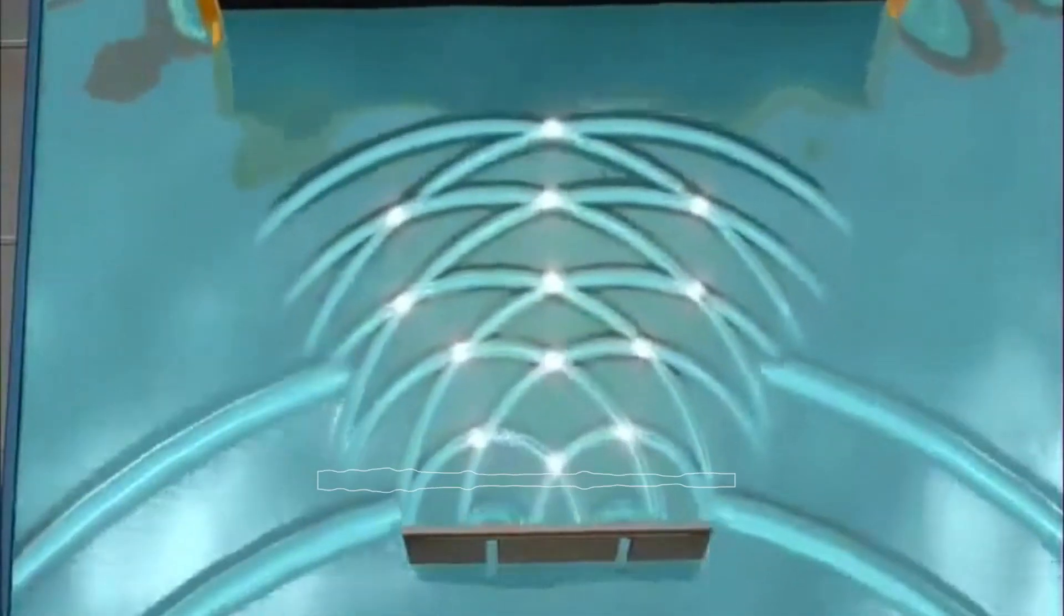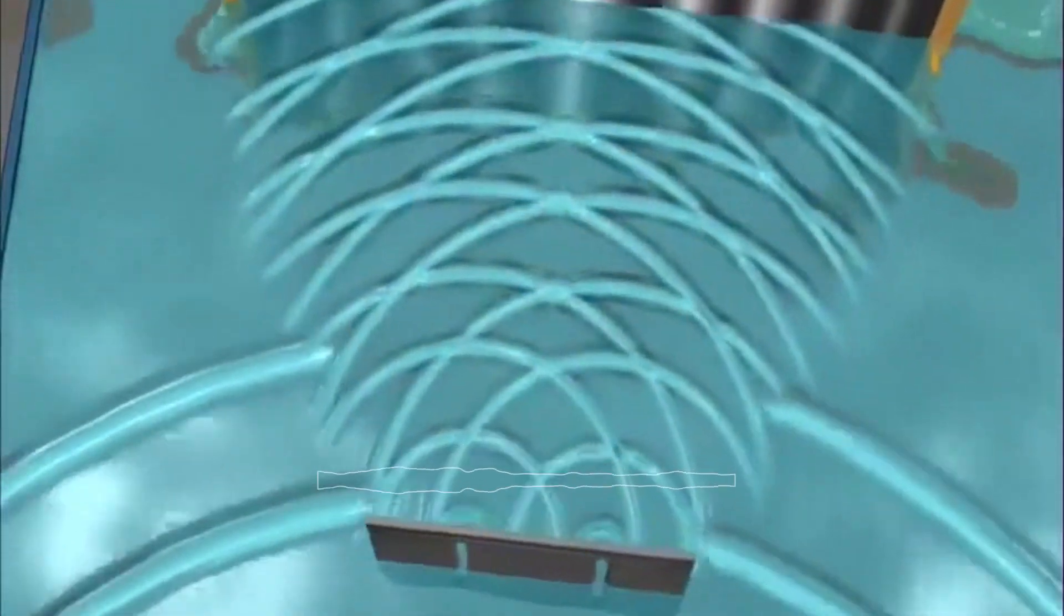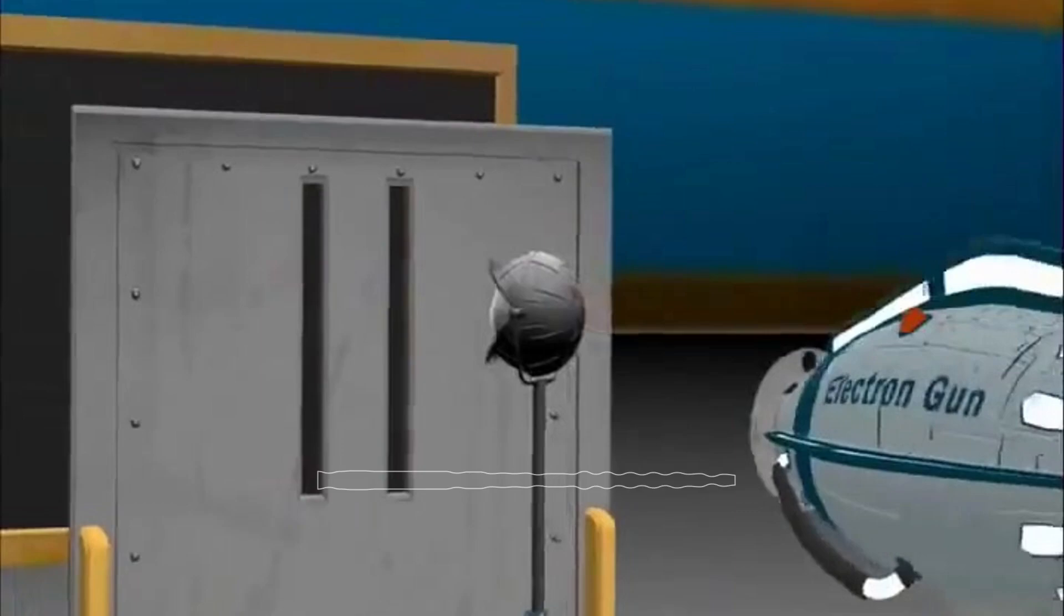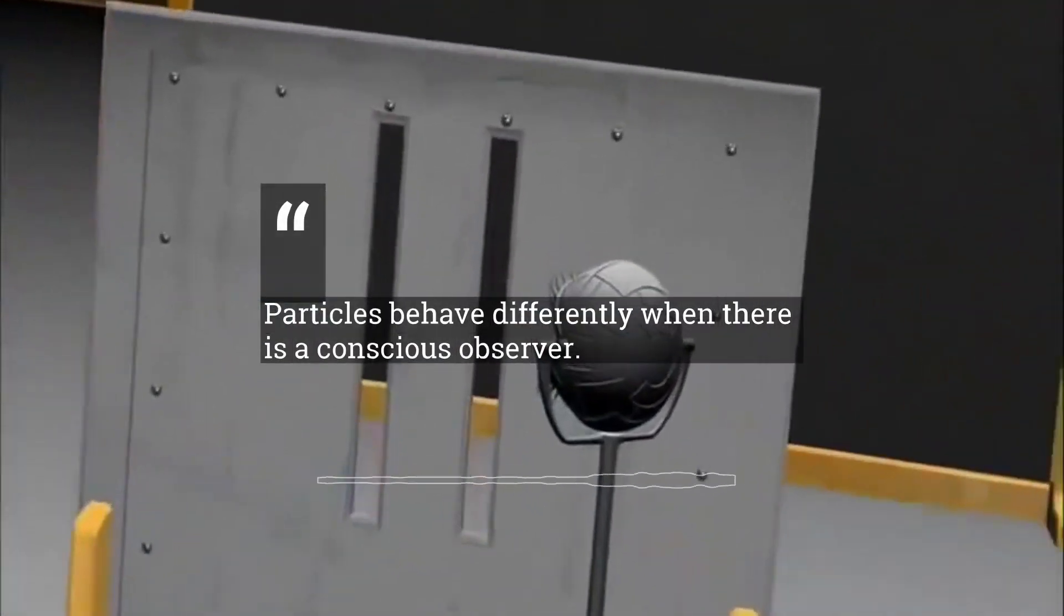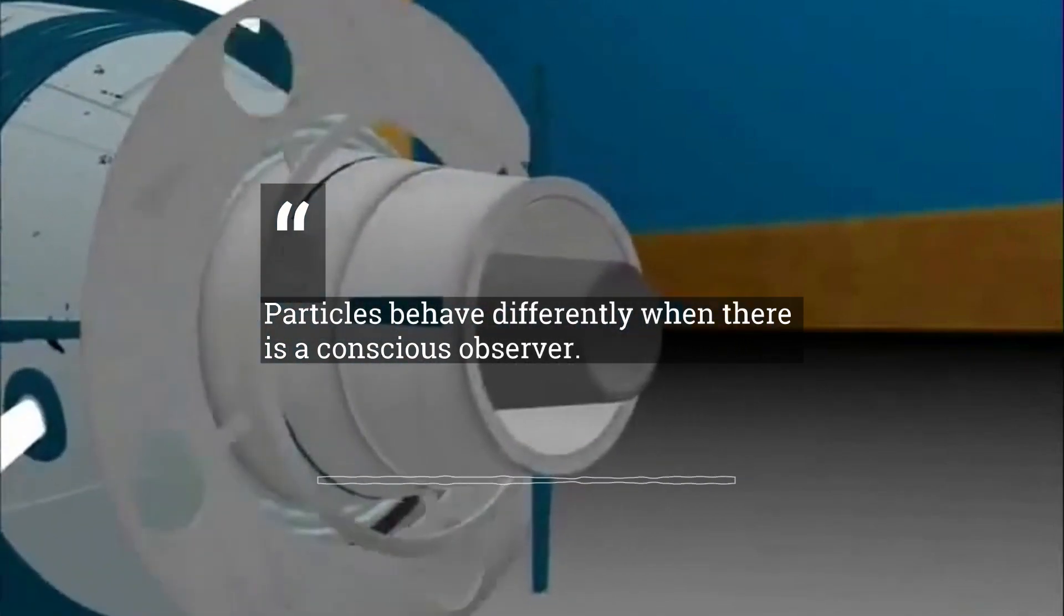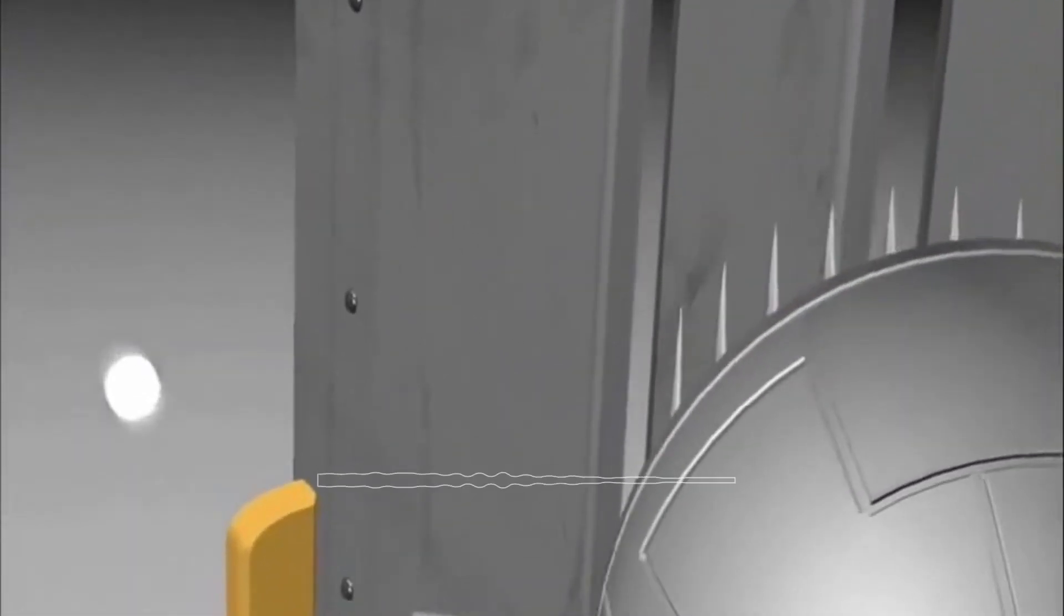Now, this is where this experiment gets interesting. As soon as a conscious observer comes into picture and starts observing these particles one by one to see through which slit it goes through in order to cause the interference pattern and to observe how the electron or proton behaves when they pass through the slits, it immediately starts behaving as expected in the beginning and creates a pattern of two bands on the screen.